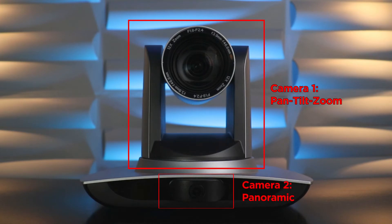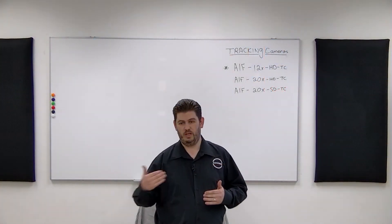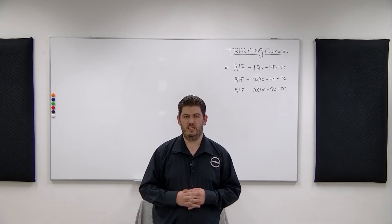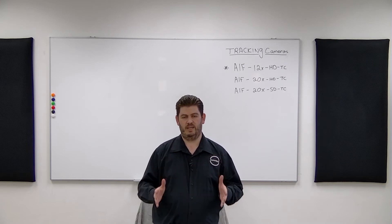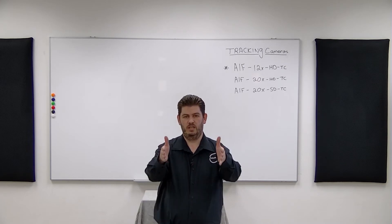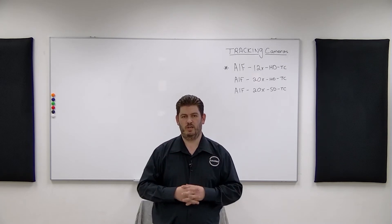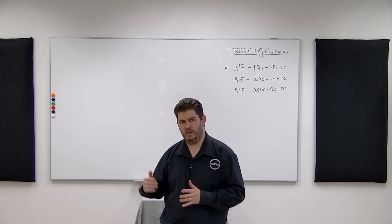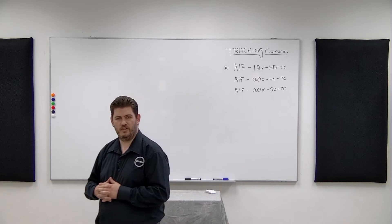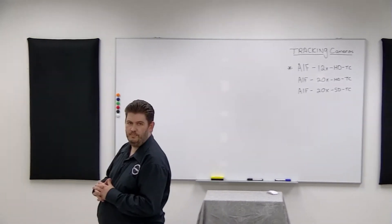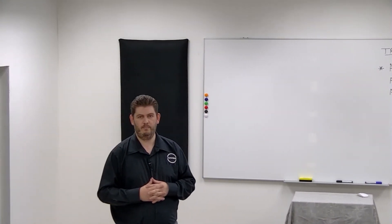The panoramic camera is really a wide angle view. As you saw when I walked into frame at the beginning, the camera basically zoomed and started tracking me. If I just move around the space here, you'll see that the camera will track me.